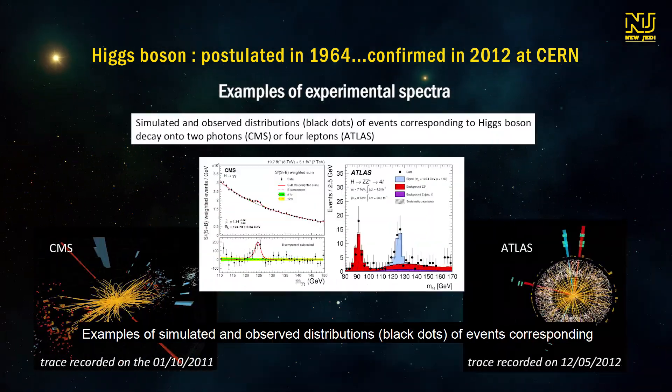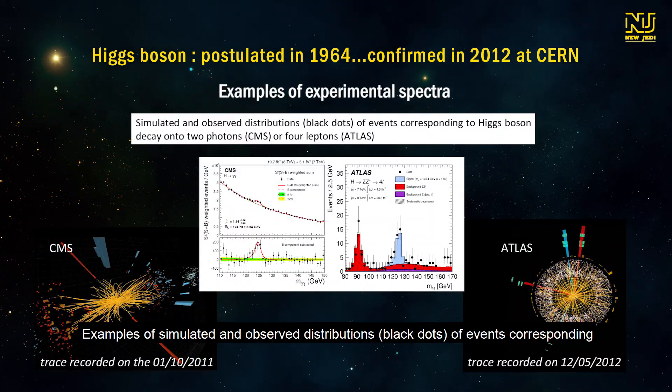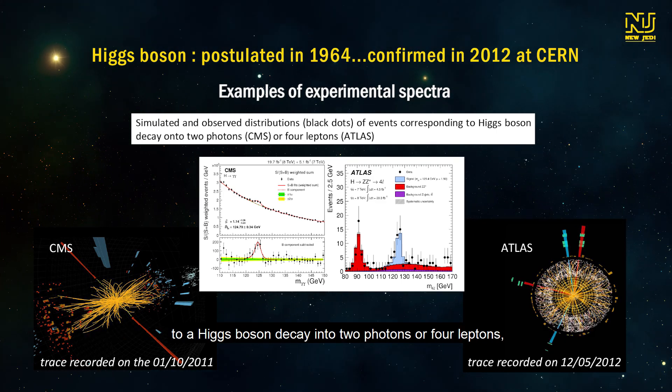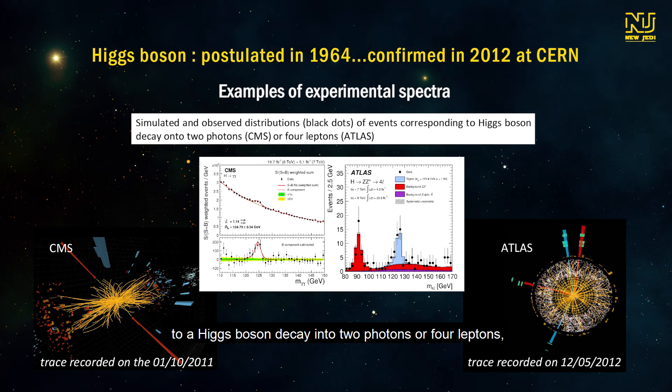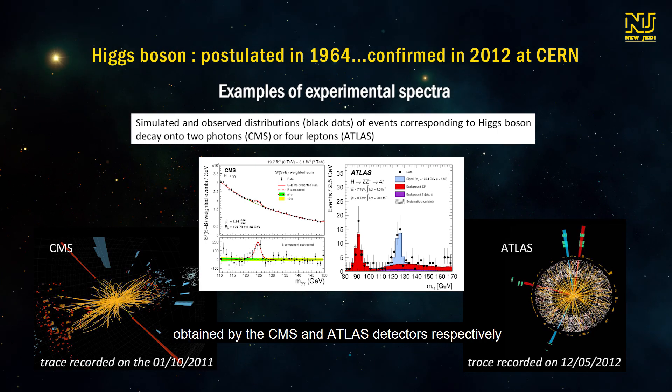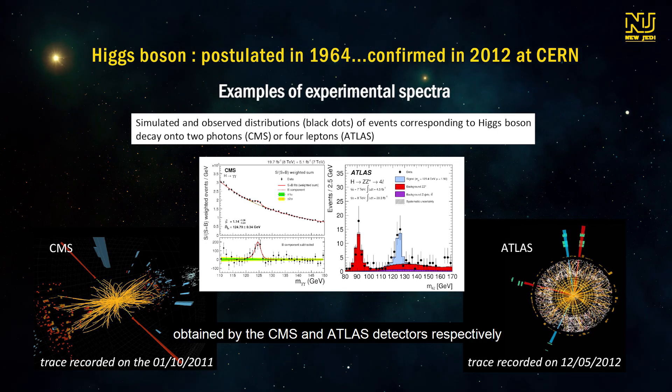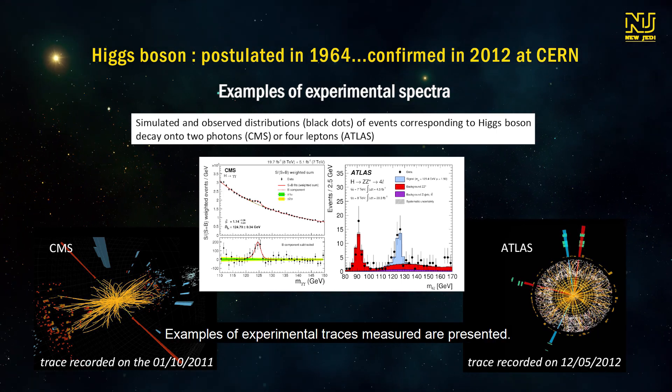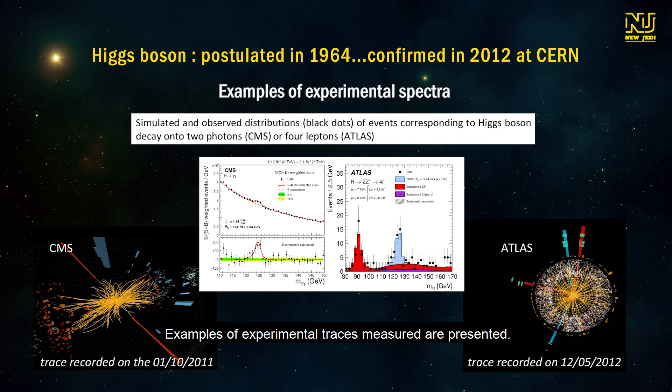Examples of simulated and observed distributions, black dots, of events corresponding to a Higgs boson decay into two photons, or four leptons, obtained by the CMS and ATLAS detectors respectively, and independently, are shown. Examples of experimental traces measured are presented.